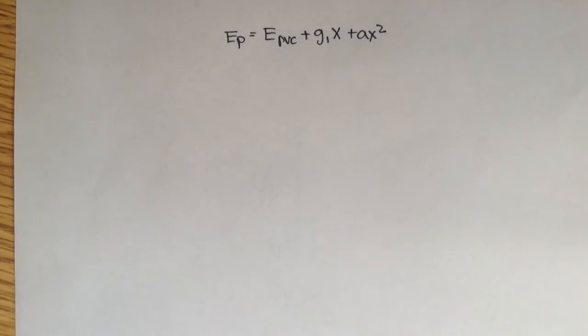Alright, welcome back. In the last video, we explored this equation a little bit more. Ep is equal to elevation of point of vertical curvature plus the entering tangent times the distance to any point plus A x squared.